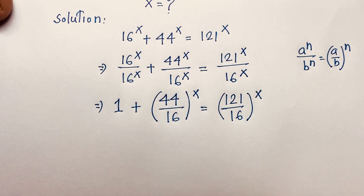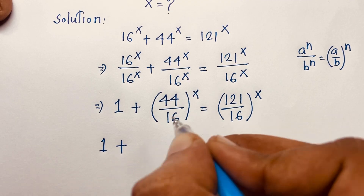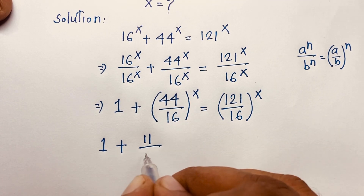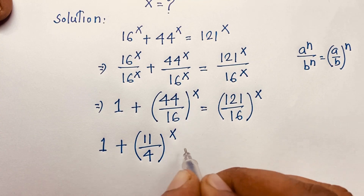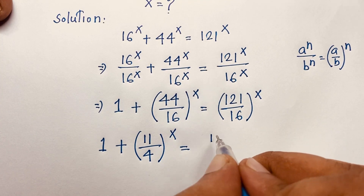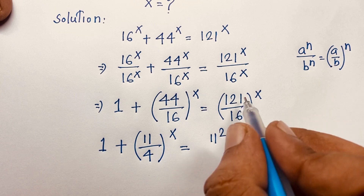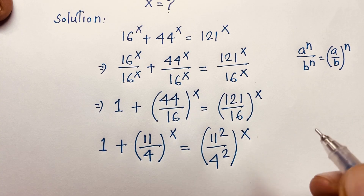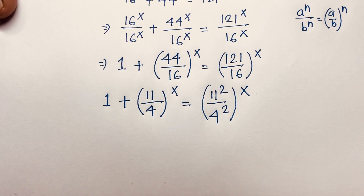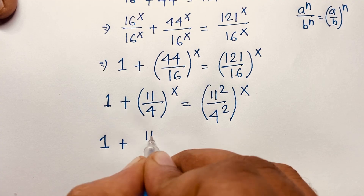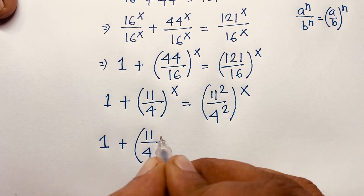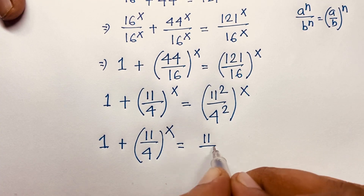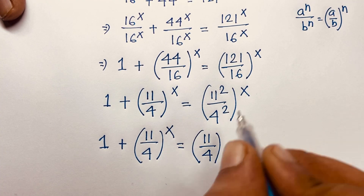Now if I divide 44 and 16 each by 4, I get 11/4. And 121/16 is (11/4)^2, since 11 squared is 121 and 4 squared is 16. So the expression becomes 1 plus (11/4)^x equals ((11/4)^2)^x, which simplifies to (11/4)^(2x).